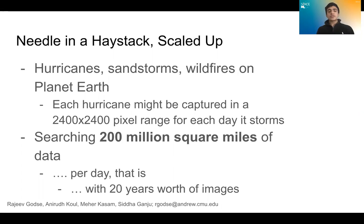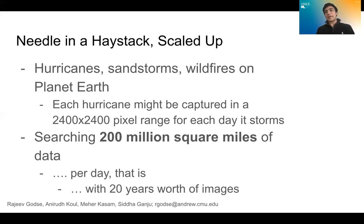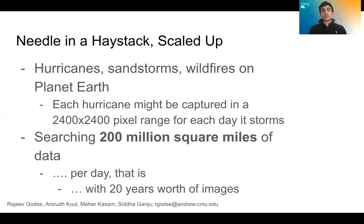But how far does this problem scale up within the world of Earth science? Researchers in the field may need to search for a hurricane, a sandstorm, or a polar vortex across the wide expanses of planet Earth. We're searching through 200 million square miles of surface area per day, and we have 20 years of data so far. Our aim was to make it easier for Earth scientists to find whatever needle they're looking for, no matter how big or small it is.